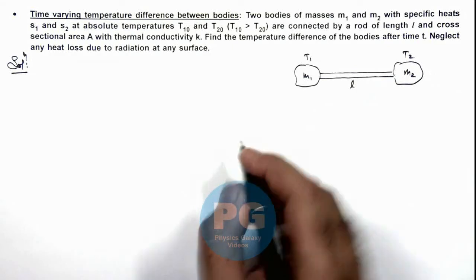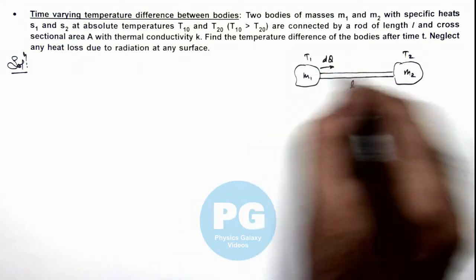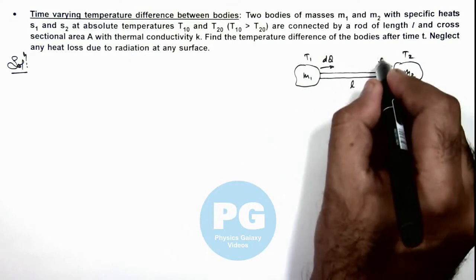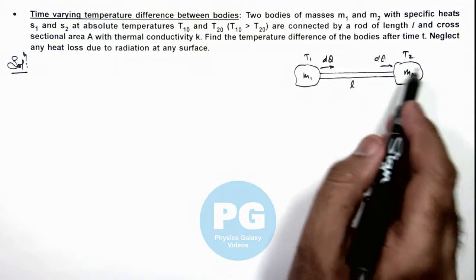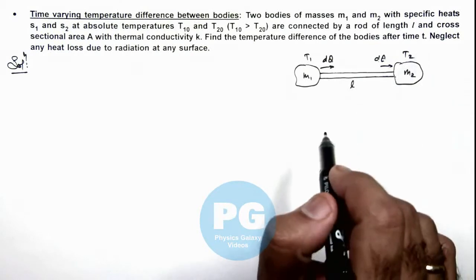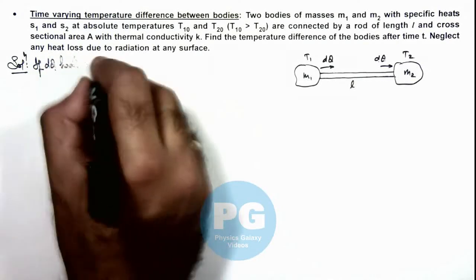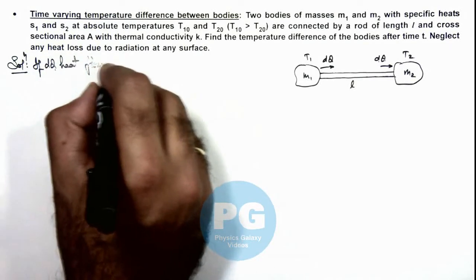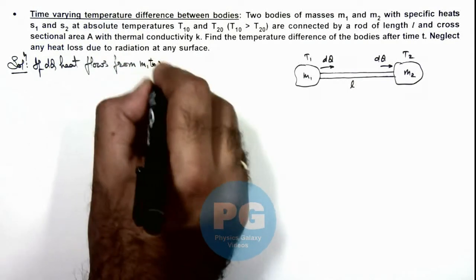So in this situation, say when dQ amount of heat flows from m₁ to m₂, then its temperature will fall by dT₁ and its temperature will increase by dT₂. So here we can write if dQ heat flows from m₁ to m₂ at any instant.